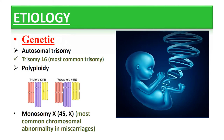Polyploidy refers to the presence of three or more multiples of a haploid number of chromosomes — for example, 3n and 4n. Monosomy X is a genetic condition in which there is a partial or complete missing of an X chromosome. Monosomy X is the most common chromosomal abnormality in miscarriage. To summarize: the most common trisomy leading to miscarriage is trisomy 16, and the most common chromosomal abnormality is monosomy X.